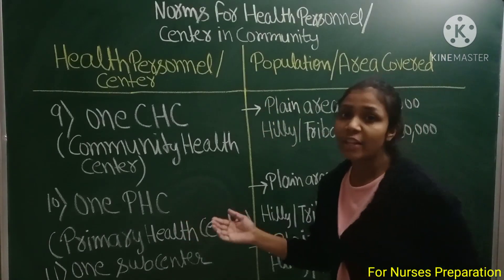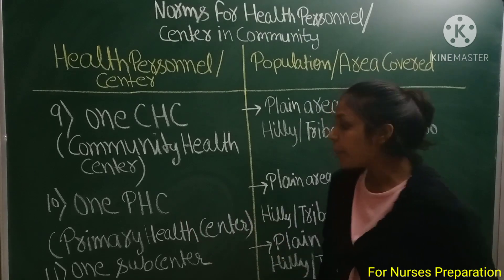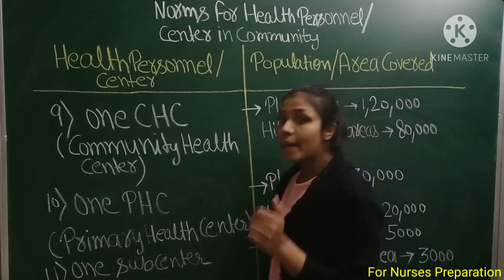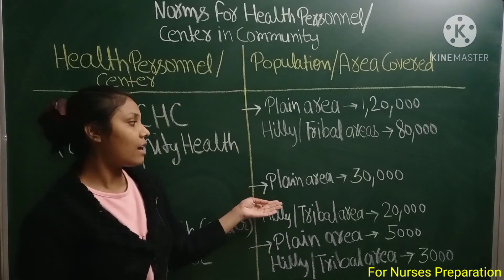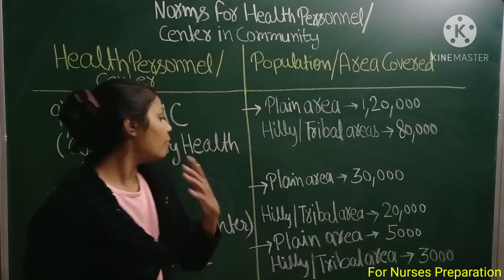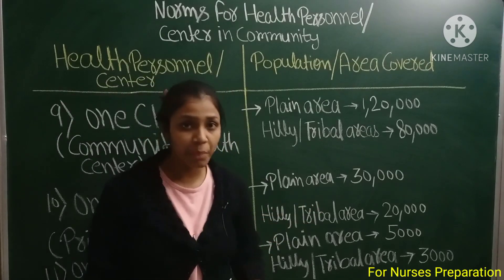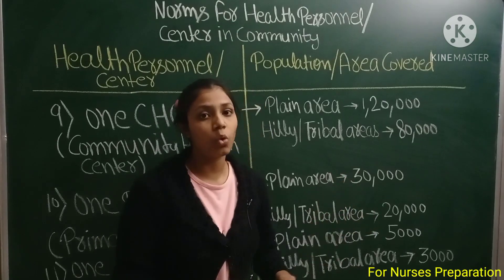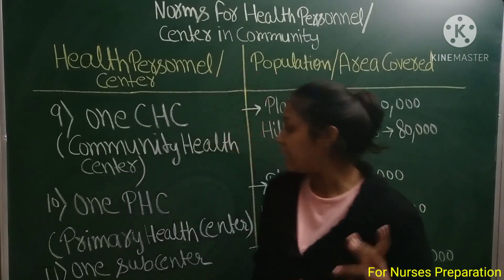One PHC — PHC की full form है Primary Health Center. One PHC को plain areas में 30,000 लोगों पर appoint किया जाता है, वहीं hilly या tribal areas में इसको 20,000 लोगों पर appoint किया जाता है.